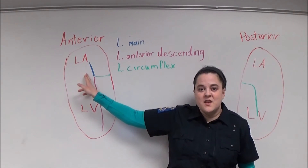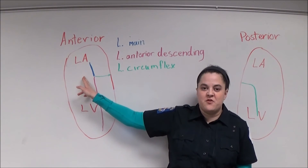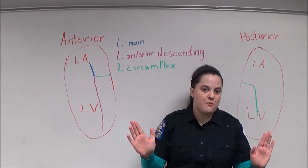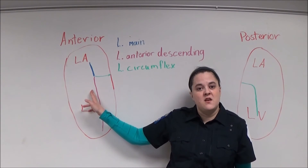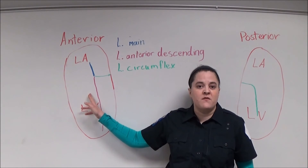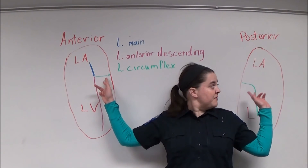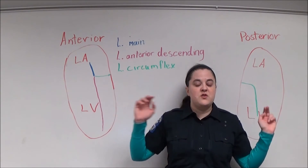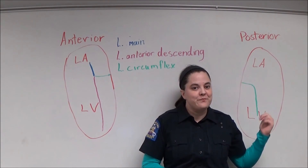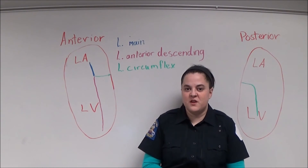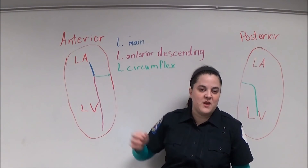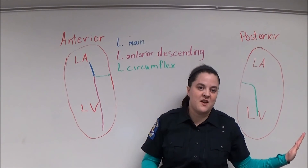The left main coronary artery supplies blood to the lateral wall of the left atrium and the lateral wall of the left ventricle. It then splits into two separate arteries: the left anterior descending, which supplies blood to the anterior septum and to the anterior wall of the left ventricle, and the left circumflex, which provides blood to the atrium and also to the posterior wall of the left ventricle. A myocardial infarction resulting from a blockage in the left main artery is known as a widow maker because it shuts off blood supply to the entire left side of the heart.